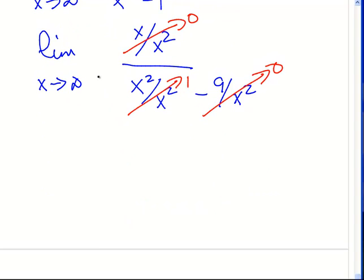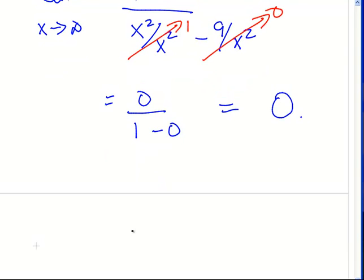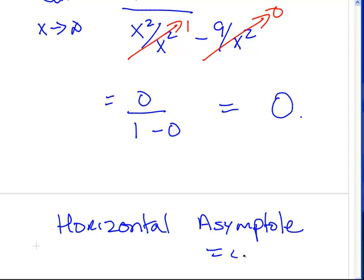So, what we have here is 0 over 1 minus 0, and that answer is 0. So, the asymptote, the horizontal asymptote, is 0.